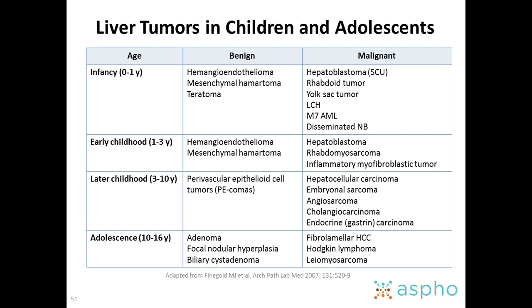And less frequently inflammatory myofibroblastic tumor. After three years of age, hepatoblastoma incidence drops and you start thinking about hepatocellular carcinoma. There are a few benign tumors between three and ten — the most common could be the PEComas. The malignant tumors you need to consider are hepatocellular carcinoma, but always make the differential with embryonal sarcoma of the liver, and less frequently angiosarcomas and others.